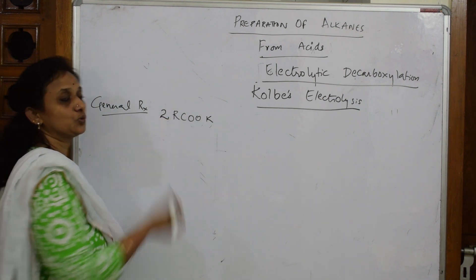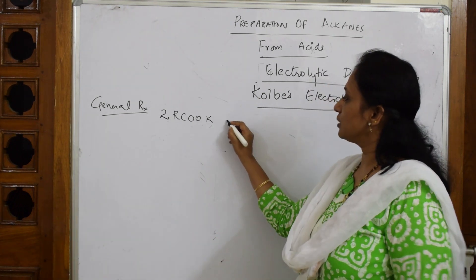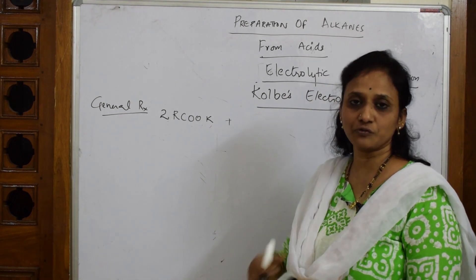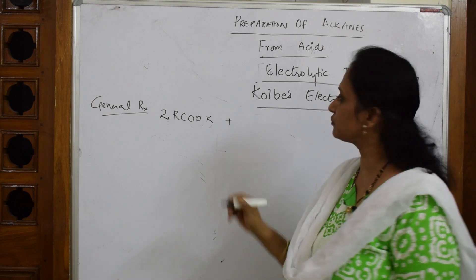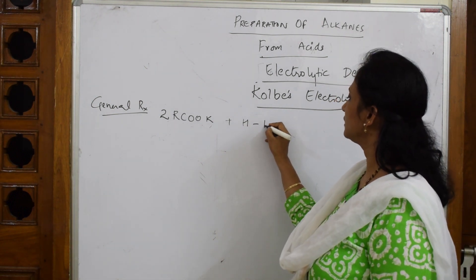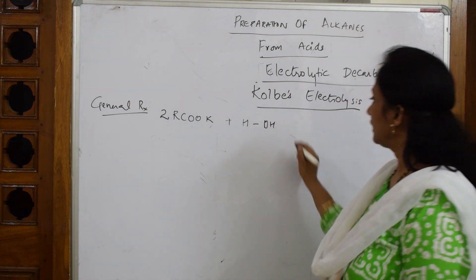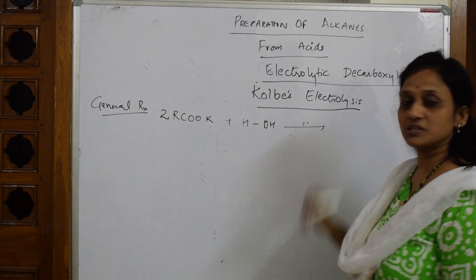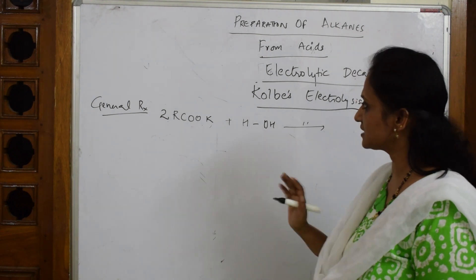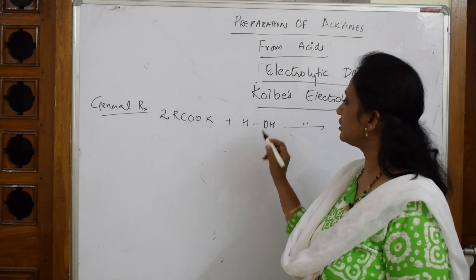I'm going to take two moles of that. In the electrolysis process, water is needed — without water there is no movement of ions. So I'm adding H₂O. During electrolysis, when current flows, bond cleavage occurs.